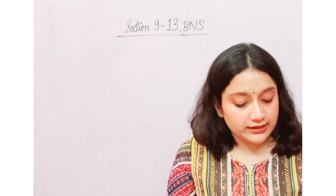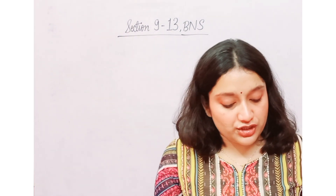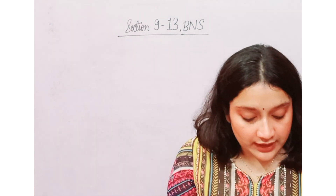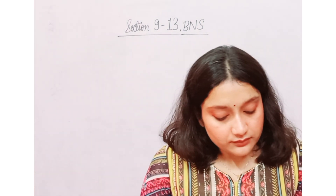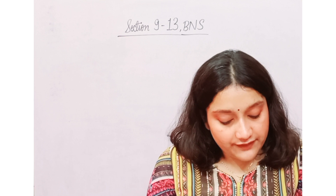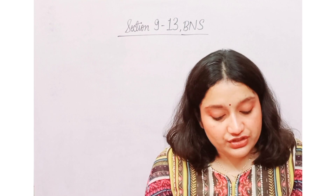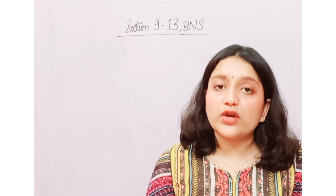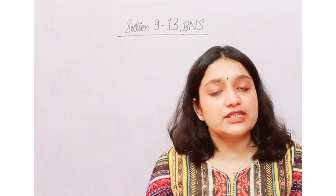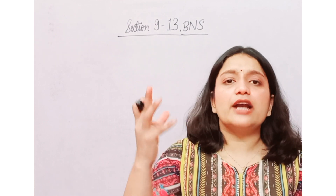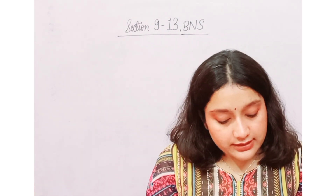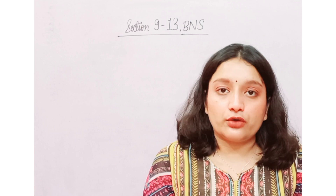Section 9 tells us about the limit of punishment of an offense made up of several offenses. Subsection 1 says: where anything which is an offense is made up of parts, and any of those parts is itself an offense.